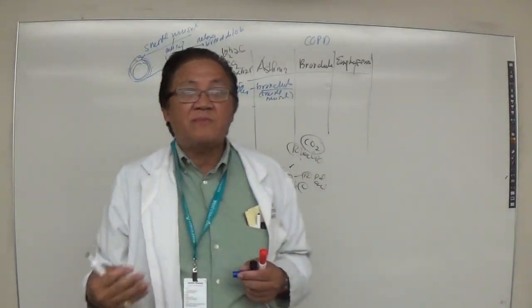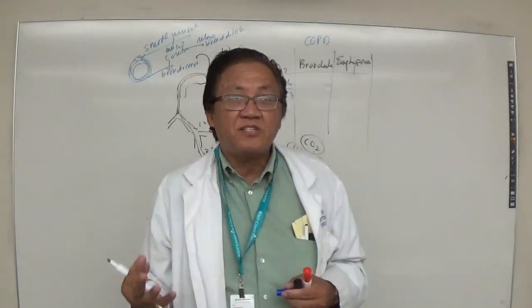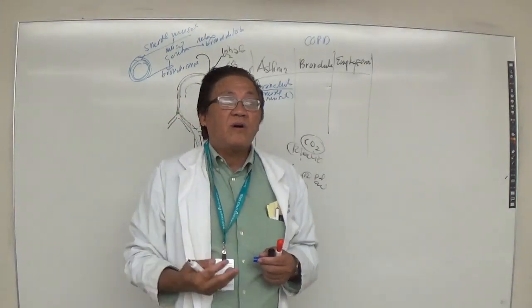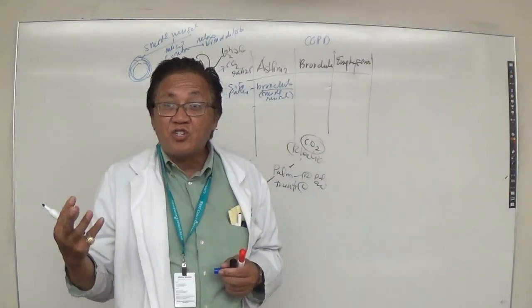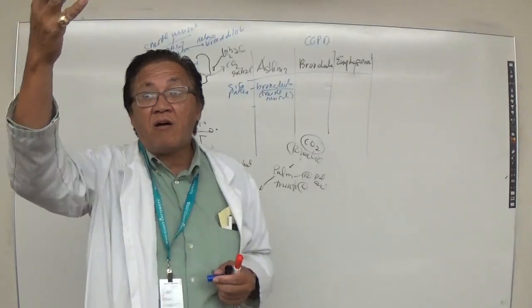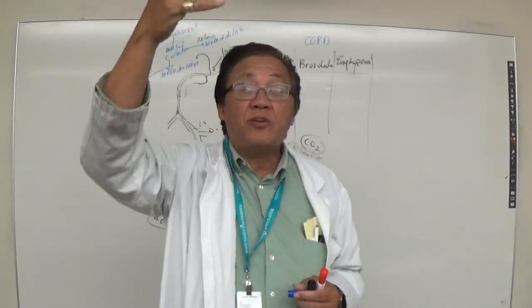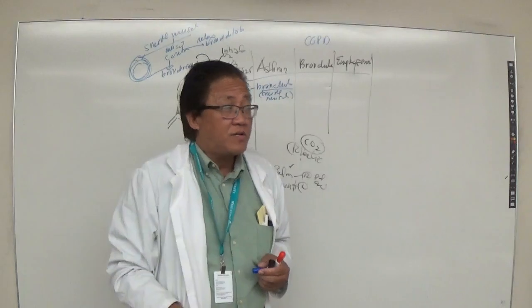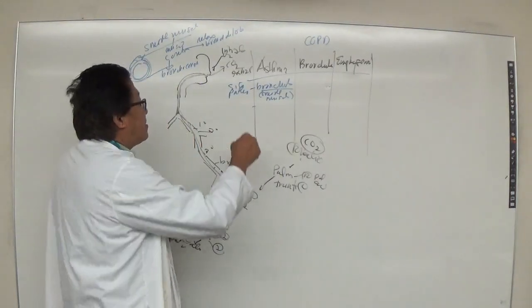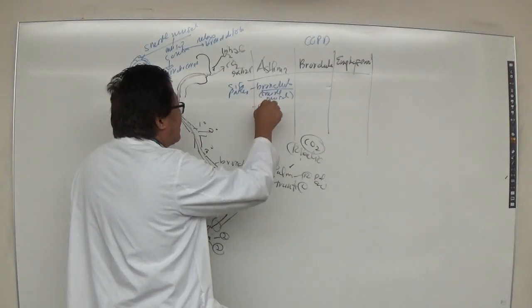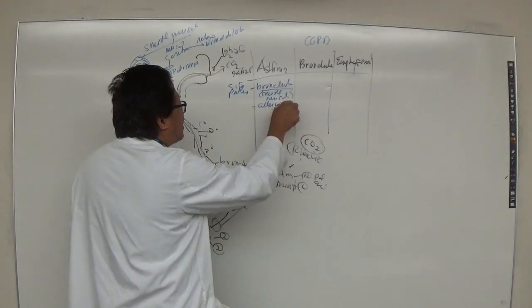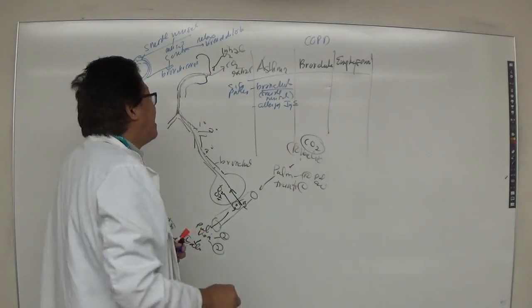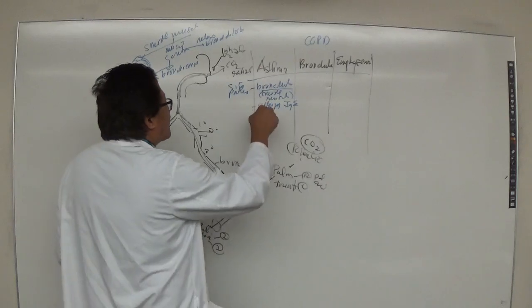In asthma, there are two types: extrinsic and intrinsic. Extrinsic is the allergenic type. Patients are exposed to an allergen — like dog hair, cat hair, or pollen during summer — and they develop an IgE-mediated allergy, leading to bronchospasm.